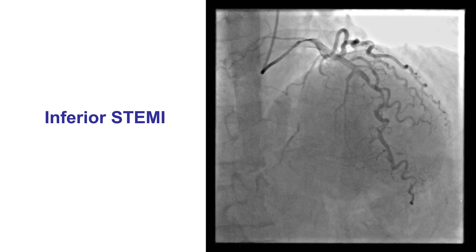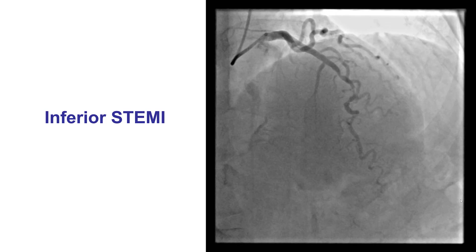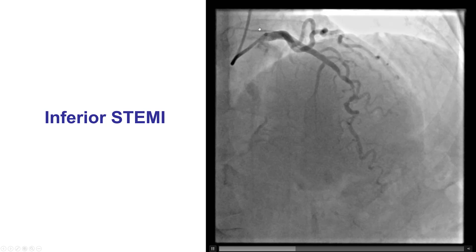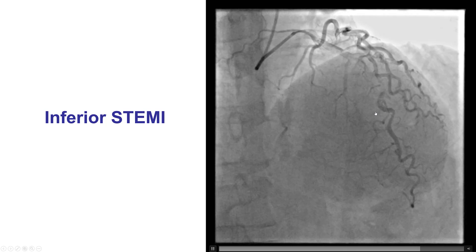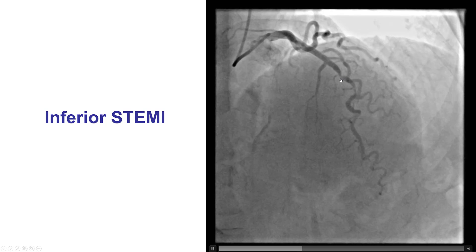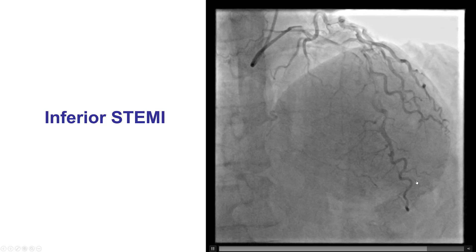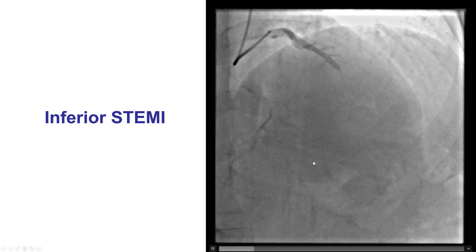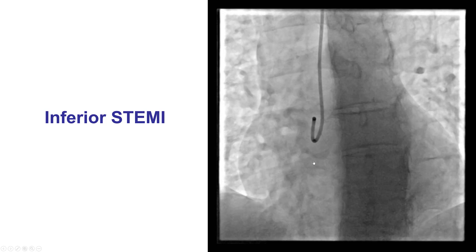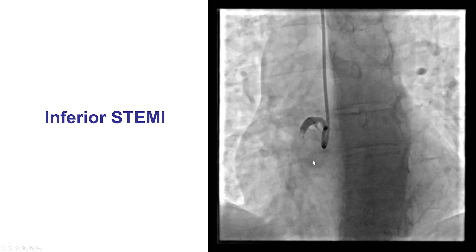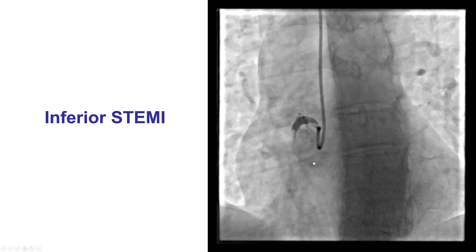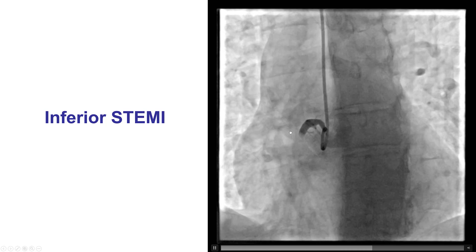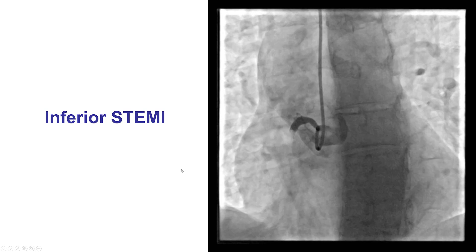The patient presented with an ST segment elevation inferior MI. Right radial access was obtained and diagnostic angiography demonstrated significant disease in the mid-LAD, however with preserved antegrade flow. There was some retrograde filling of the PDA as well as the posterolateral vessel. Injection of the right coronary artery confirmed an occlusion of the mid-right coronary with a large intraluminal filling defect suggestive of thrombus.